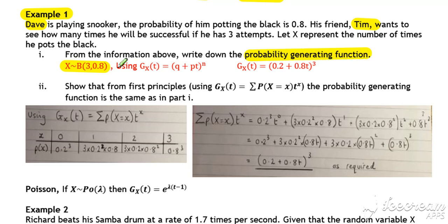...we can literally just substitute our n and p values into your standard formula quotable from the formula booklet. So your probability generating function for this situation will be (0.2 + 0.8t)³. So just subbing values into the quotable result.